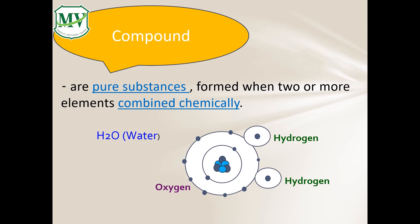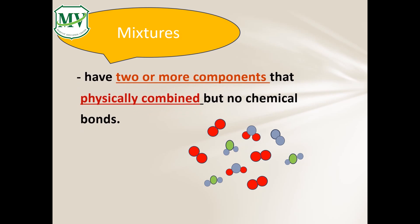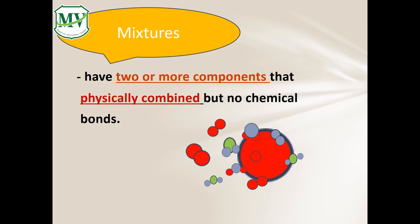We say that water has a fixed composition. Mixtures. Mixtures have two or more components that are physically combined but no chemical bonds between the components. Mixtures do not have any fixed composition too. Air is a mixture. It has water molecules, oxygen molecules, carbon dioxide molecules, and nitrogen molecules.